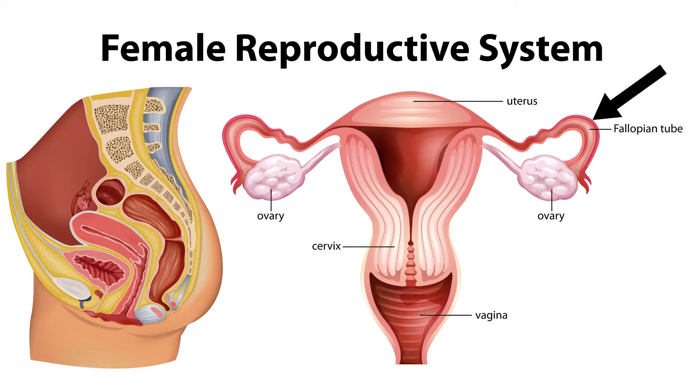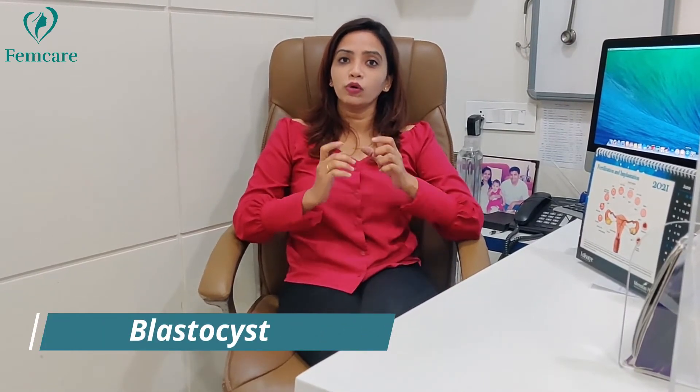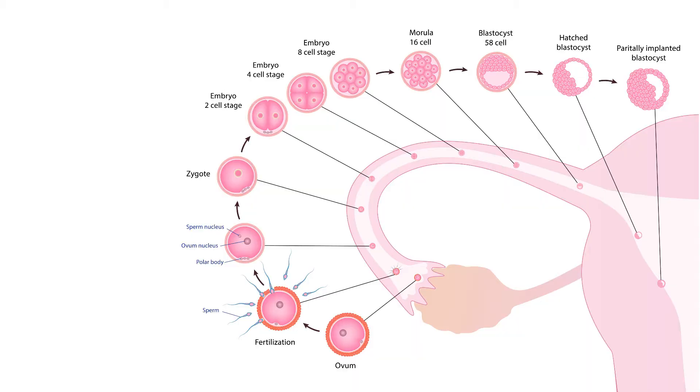When ovulation occurs, the sperm sample goes into the fallopian tube. After ovulation, the egg generally remains viable for 12 to 24 hours in the fallopian tube. After fertilization and after blastocyst formation, the embryo remains in the fallopian tube.